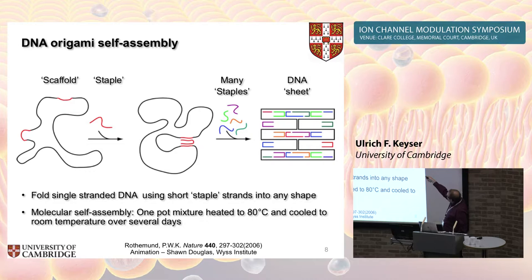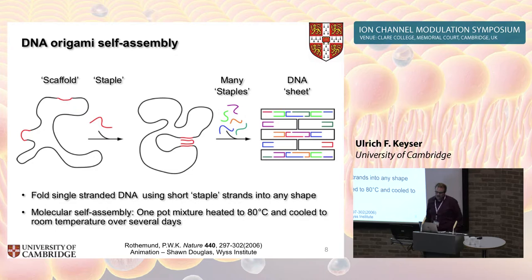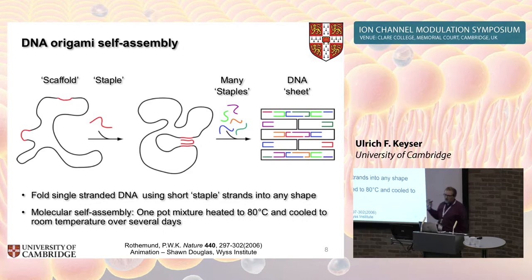You have an addressable system because you know exactly where each staple strand goes — so you can add chemical modifications with nanometer precision. You can add hydrophobic groups, modified bases, or dye molecules to make these structures fluorescent. So you have a full range of possibilities to functionalize these structures.